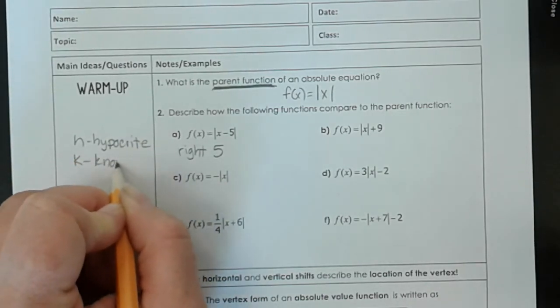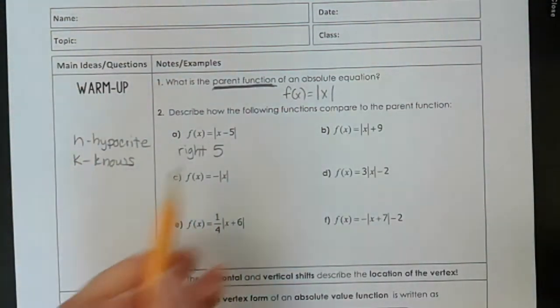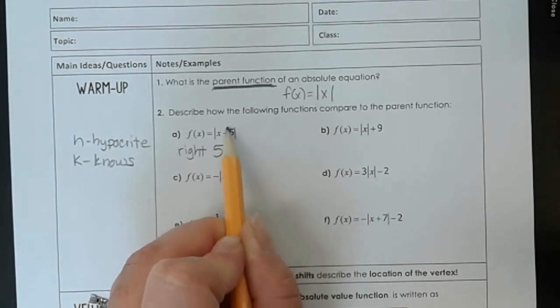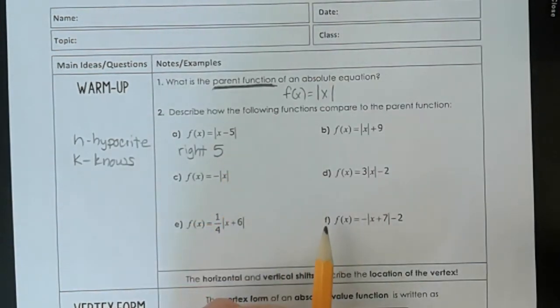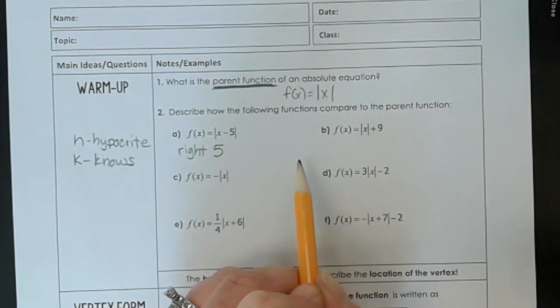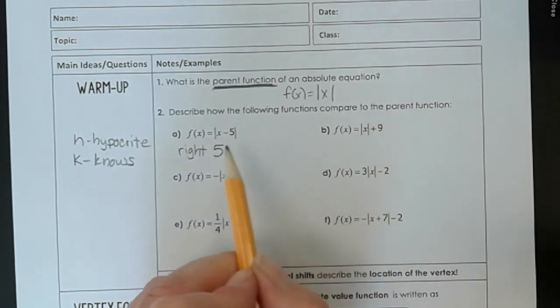Now remember we talked about there's h and there's k, and h is a hypocrite. So h is this one in here with x. H is a hypocrite. So if you see a negative, he does the opposite. So if you see a negative, you do the opposite, which is positive. So you see a negative 5, and you move to the positive direction 5, which is the opposite of the negative.